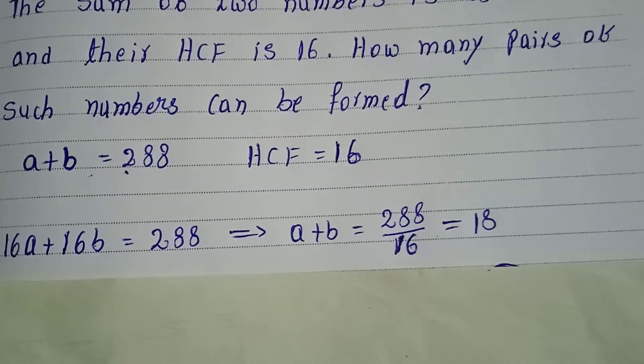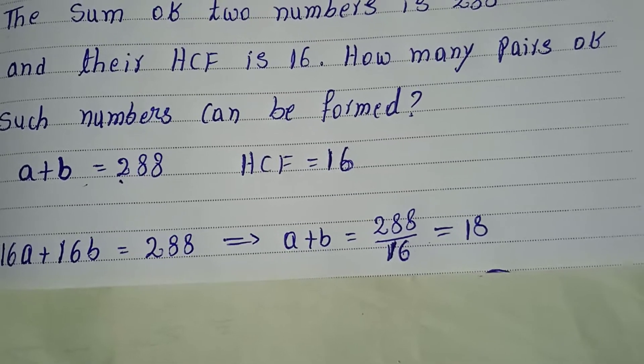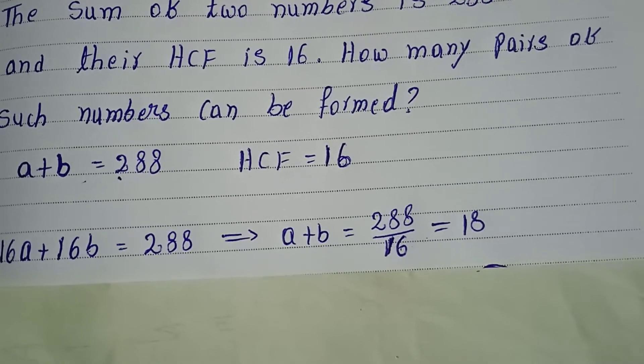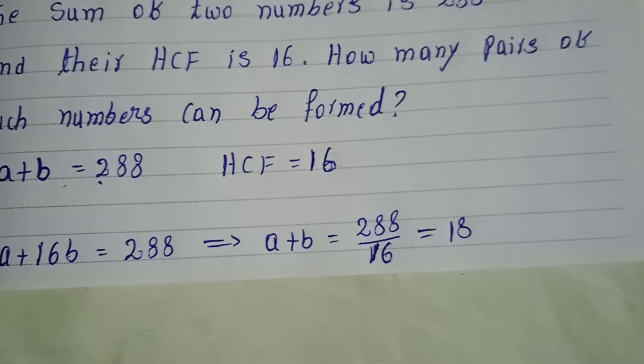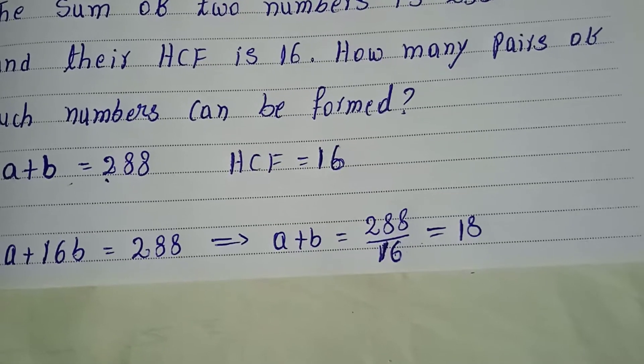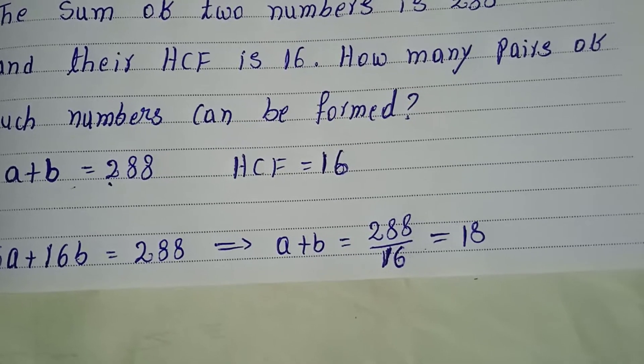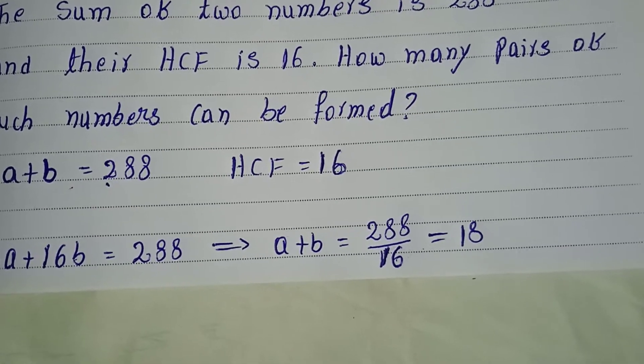So we need to find two co-prime numbers whose addition gives 18. First of all, we take 1 and 17.